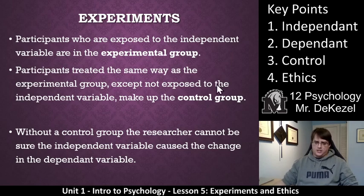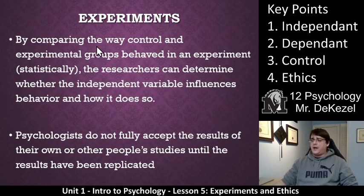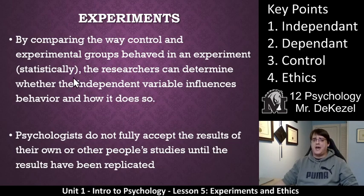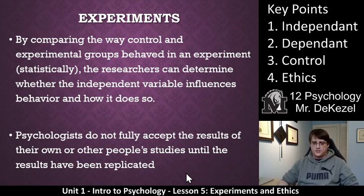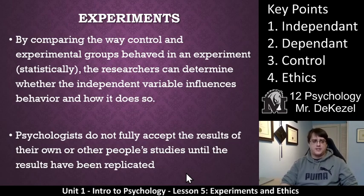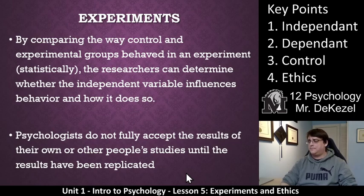You need to have both an experimental group and a control group. Without the control group, the experiment isn't very valid, so you'll want to include one in your experiment if possible. By comparing how the experimental and control groups behave, researchers can determine whether the independent variable influences behavior. Psychologists do not fully accept results of their own or others' experiments until the results have been replicated multiple times — testing on different groups ensures it wasn't a one-off or influenced by something else.